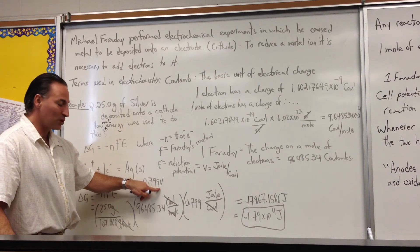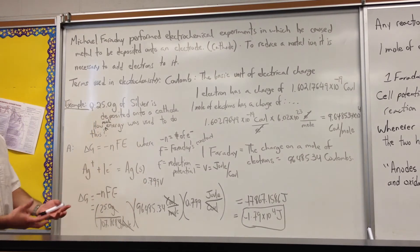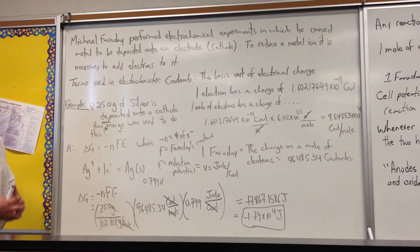The units of volts are joules per Coulomb. So it takes a joule of energy to move a Coulomb of electrons, or a Coulomb of charge, through a field of one volt.